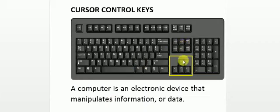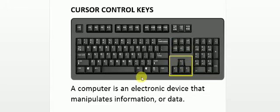Cursor control keys — these keys are also known as arrow keys. As you can see, there are right, left, up, and down arrows; these are the arrow keys or the cursor control keys. These keys move the cursor to the left, right, up, or down direction.